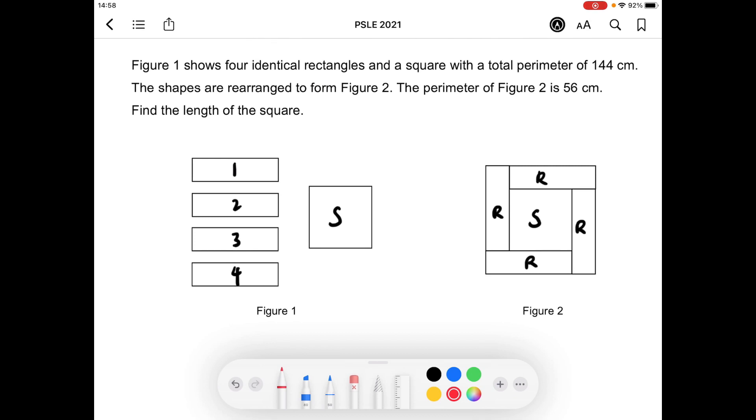If you look at Figure 2 closely, you will see that the side of Figure 2 is made up of the length and breadth of a rectangle. This is the length of the rectangle and here's the breadth.